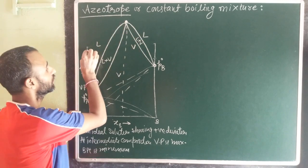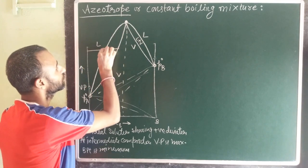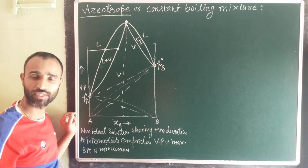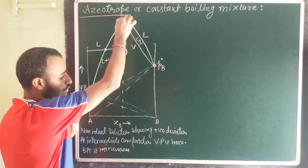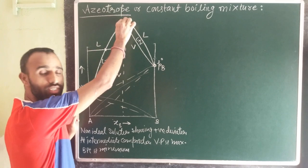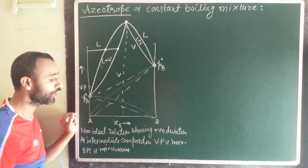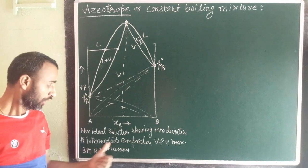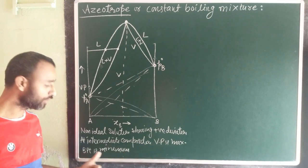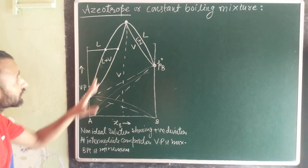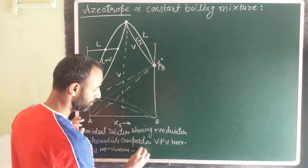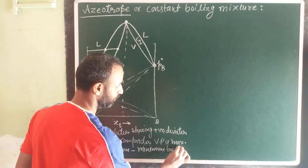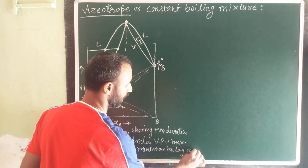If we look at other points, liquid composition is different from vapor composition. But at this particular point, liquid as well as vapor composition is the same. That is called an azeotropic mixture. Since vapor pressure is maximum here, boiling point is minimum, and this type of mixture is called a minimum boiling azeotrope.